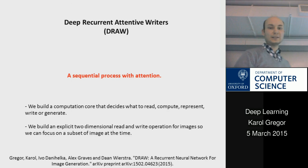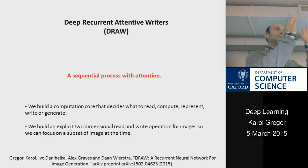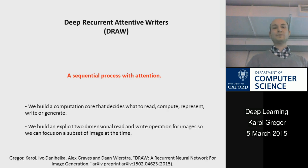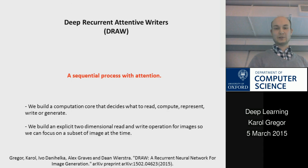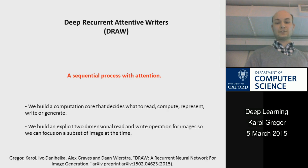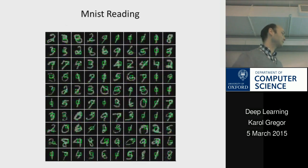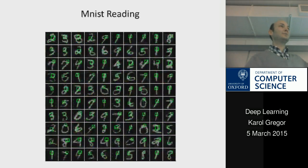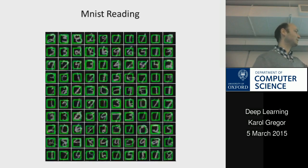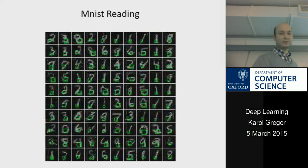For this we introduced the architecture called Deep Recurrent Attentive Writer — DRAW — because it draws stuff. It is a sequential process with attention. There is a computational core which decides what to read, what to compute, what to represent, and what to generate at every time step. We also introduced an attention mechanism. As humans we have an explicit attention mechanism — we point our eyes somewhere. These attention mechanisms are becoming very popular, and here there is one appropriate for images.